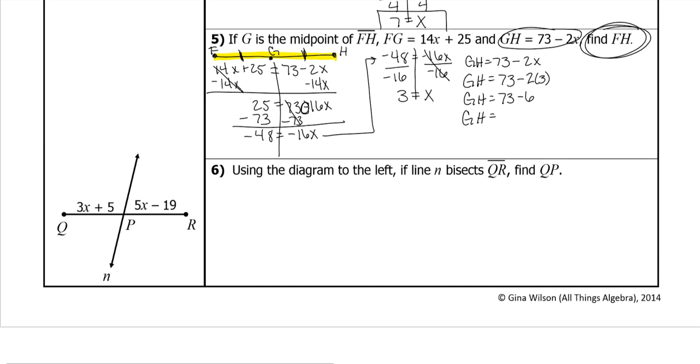Which means that GH is 73 minus 6. So GH is 67. So that means that this is going to be 67 here for GH. But if that's 67, this over here is also 67. So FH is 67 plus 67, which is 134.